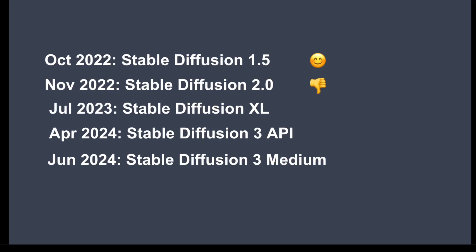In July 2023, Stable Diffusion XL was released, offering larger image size and higher image quality. It was another success and many individuals and companies fine-tuned their SDXL models to make them even better. In April 2024, Stable Diffusion 3 became available through an API, meaning you cannot run the model locally but Stability AI can run it for you and send you an image for a fee.